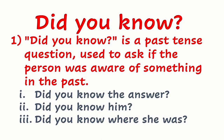'Did you know' is the past tense question used to ask if the person was aware of something in the past. For example: 'Did you know the answer?' — it's in the past. 'Did you know him?' 'Did you know where she was?' This is the past form of 'do you know.'